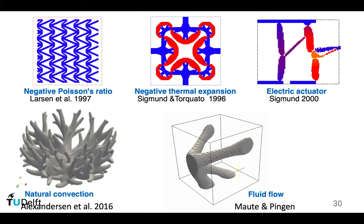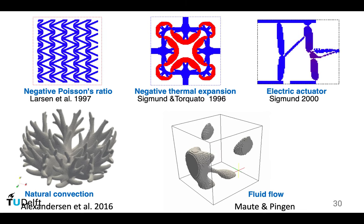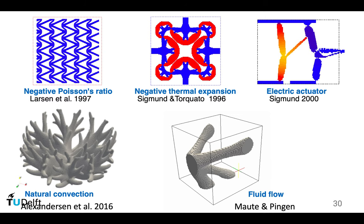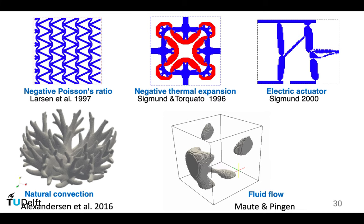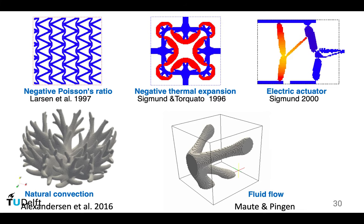Regarding applications, my colleagues have been applying this negative Poisson's ratio material to the design of implants and also personalized casts, so the cast can grow with the wearer in all x, y directions.